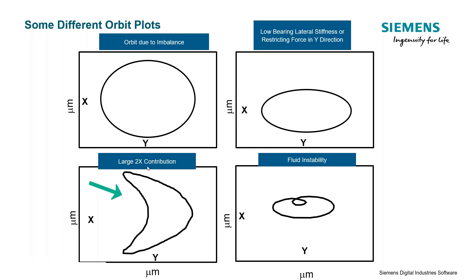If there is a large second-order contribution, you get a moon-shaped orbit. For things like fluid instability, you might get a heart-shaped orbit where the orbit crosses back over on itself — though not all systems with fluid instability will look exactly like this. All of these different orbits generated from our proximity probe data give us some clue or information as to how our rotor dynamic system is behaving and what's causing that behavior.